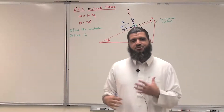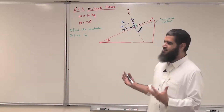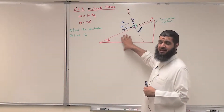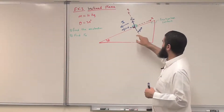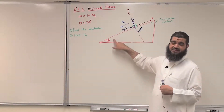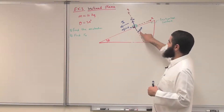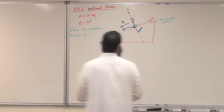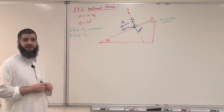Dear student, don't reinvent the wheel. Every time you see an inclined plane, you convince yourself one time that the gravitational force has two components: one component parallel to the incline given by mg sine theta, where theta is the angle the incline makes with the horizontal, and a negative y component which is mg cosine theta. Now let us apply Newton's second law in order to answer the questions.